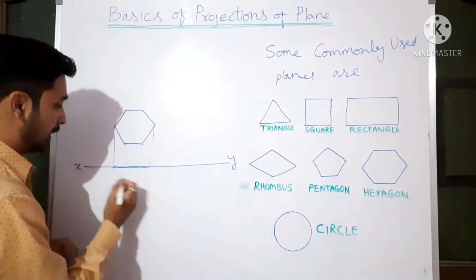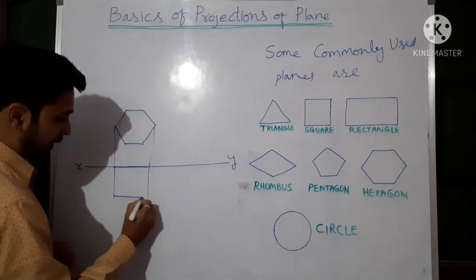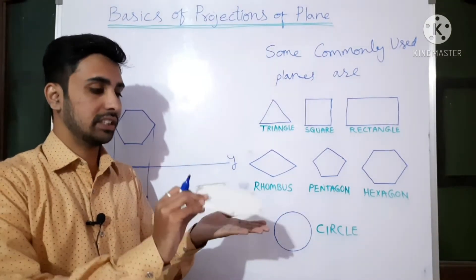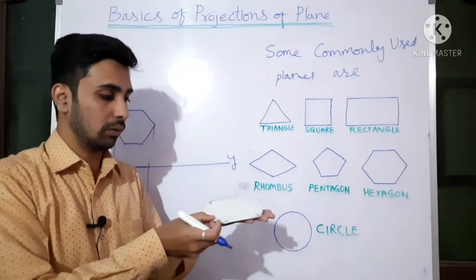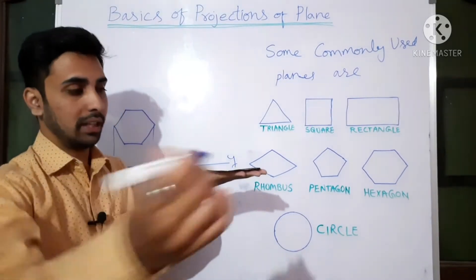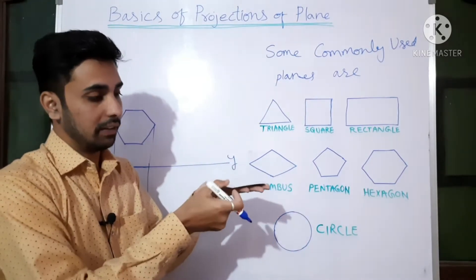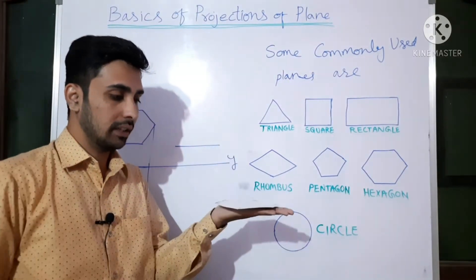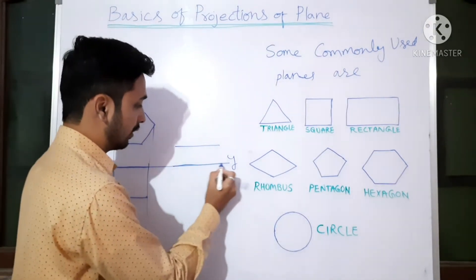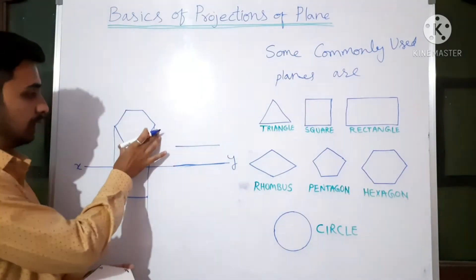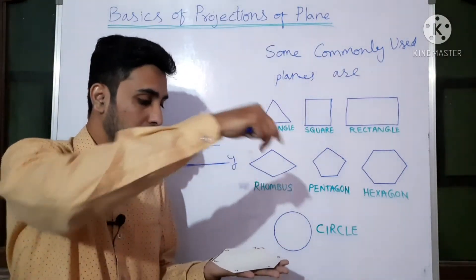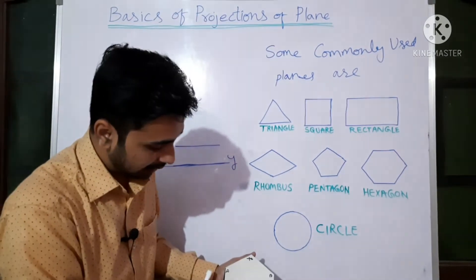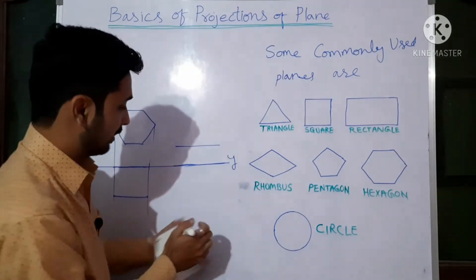If it is in front of VP it will appear like this. Now suppose the plane is resting by its surface on the horizontal plane. From the front, you are able to see only one line. If it is above HP the line will come somewhere here; if it is resting on HP the line will come on the XY line — this is the front view. Now if you see the hexagon from the top, you are able to see its entire surface.